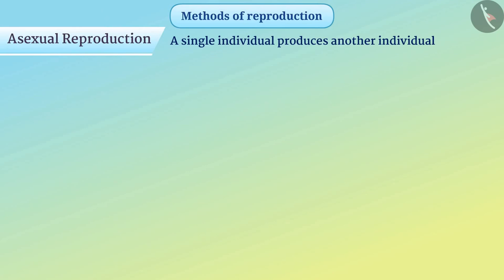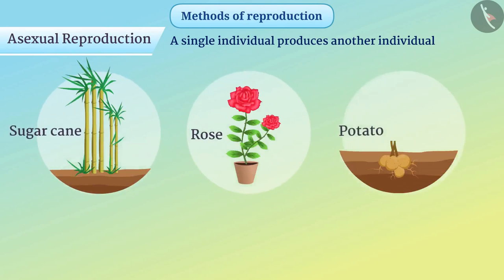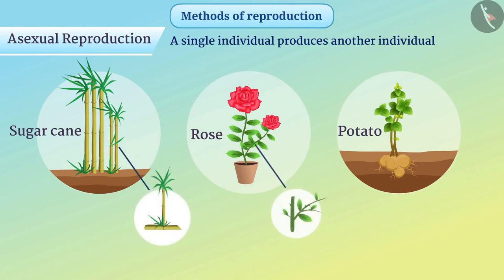Some plants like sugarcane, rose, and potato can be produced from any part of the plant. This is also asexual reproduction.